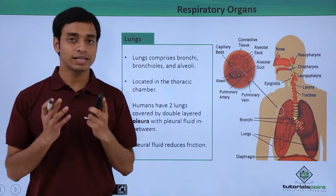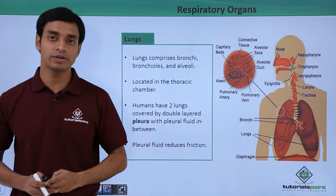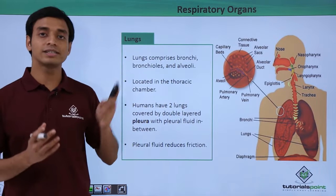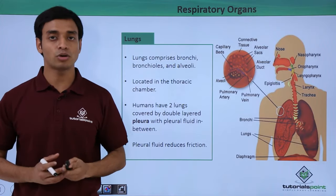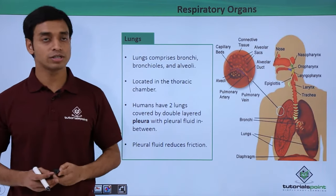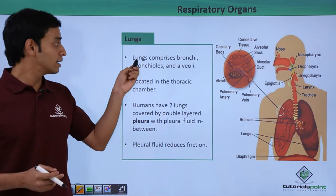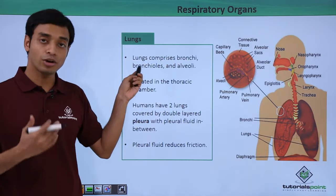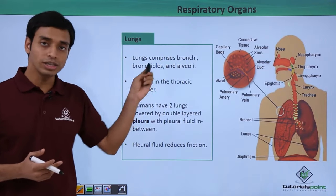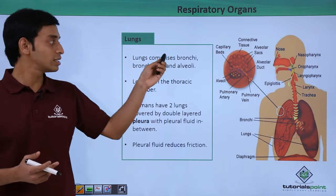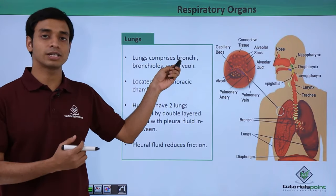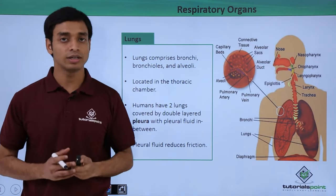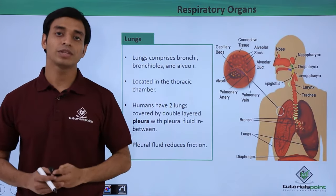The exchange of gases — oxygen and carbon dioxide — takes place in the alveoli. Now let us talk about the lungs, the most important organ of the respiratory system. Lungs are comprised of the bronchi, the bronchioles, and the alveoli.